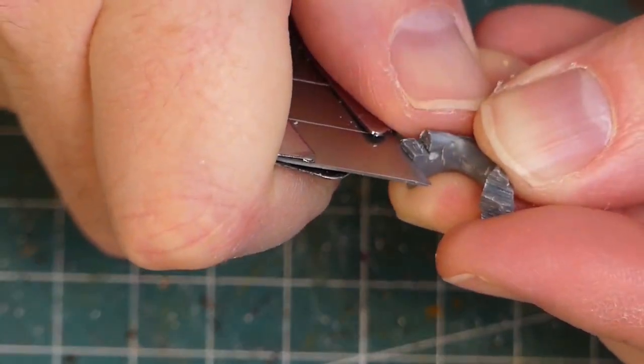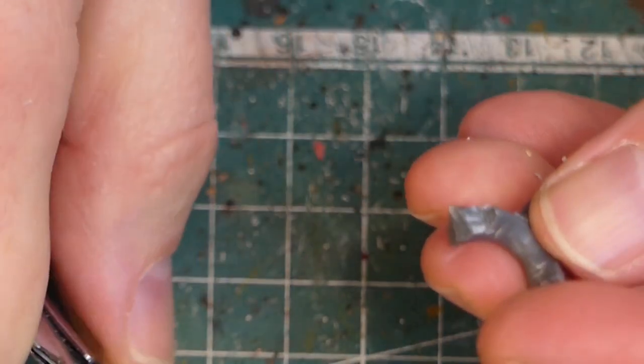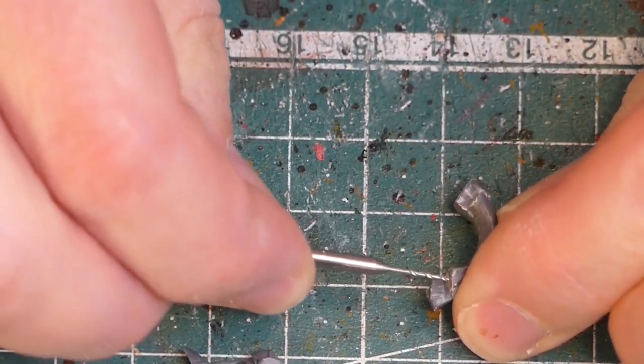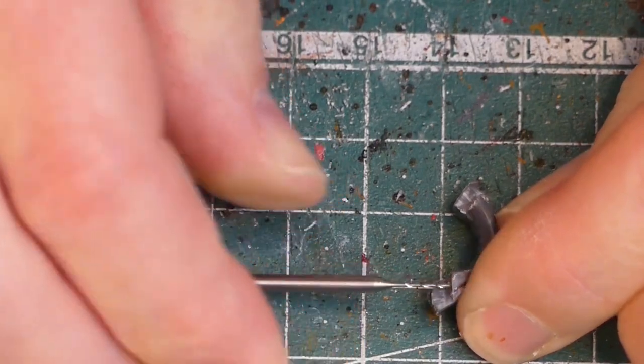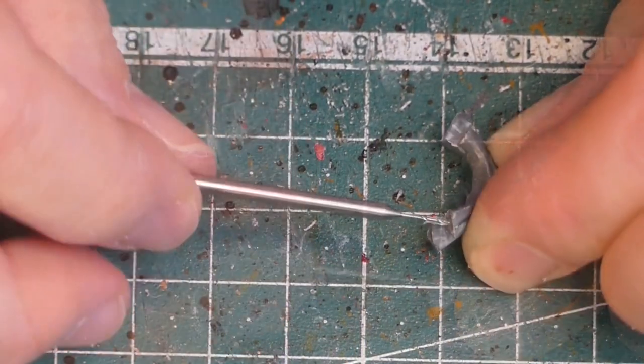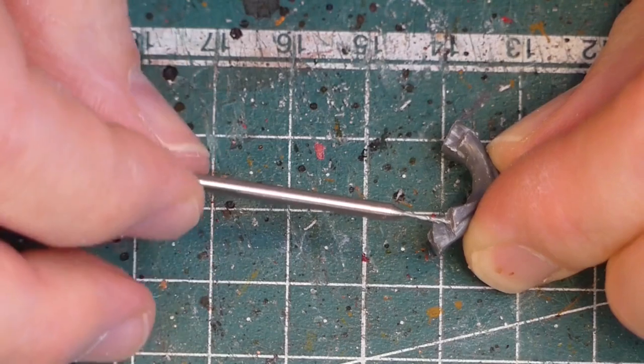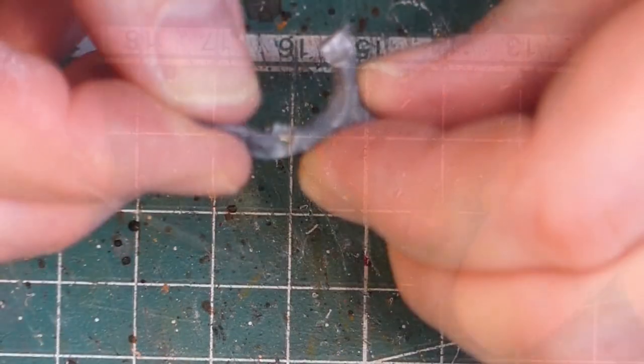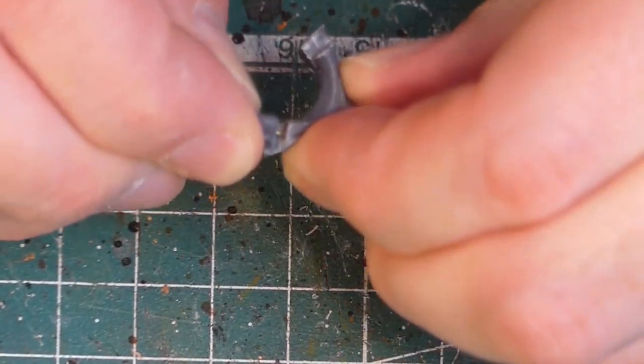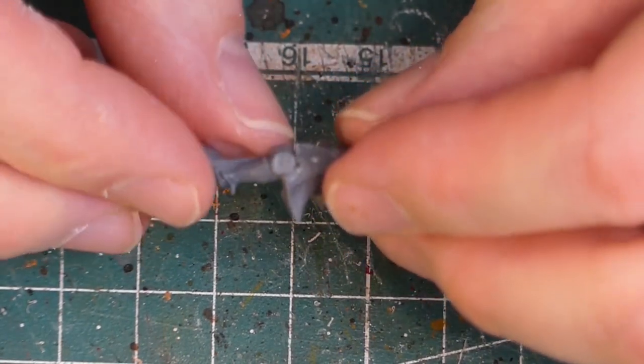Fine works are done with the knife. When everything fits, it's time for the drill. First I drill a hole in one part and place a piece of brass wire in there. Then I press the second part against the wire which leaves a small mark. At this mark the second hole is drilled so that the two parts can be connected.